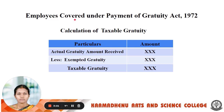Next we see about the tax treatment if the employee is a Non-Government Employee. The Non-Government Employee will be classified into two categories: employees covered under the Payment of Gratuity Act 1972, and employees not covered under the Payment of Gratuity Act 1972. For employees covered under the Payment of Gratuity Act 1972, the taxable Gratuity amount will be calculated as: actual Gratuity amount received less exemption — the remaining amount will be taxable.